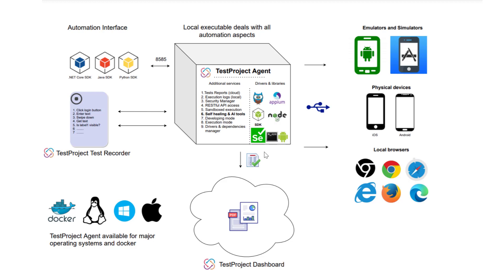Another way is by using the TestProject Agent in development mode with the TestProject OpenSDKs, which communicate with the Agent via port 8585 and allow you to use standard Selenium and Appium commands to use the Agent as a gateway for your automation, saving you time using and maintaining Selenium drivers and Appium servers.